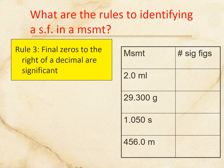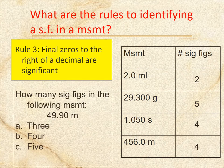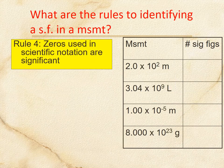Zeros after a decimal point, once you've reached a real non-zero number, count as significant. So 2.0 is two sig figs, 29.300 is five, 1.050 is four, and 456.0 is four. For the question about 49.3 — actually 2.90 — if you said b, which is 4, you are correct.